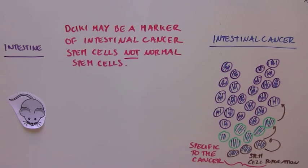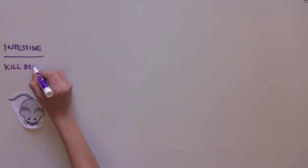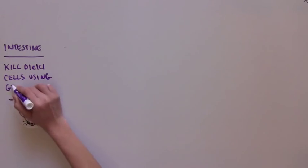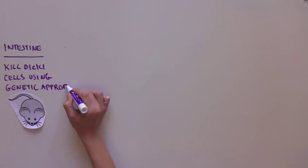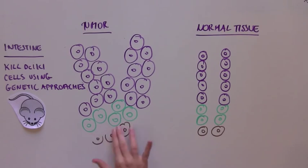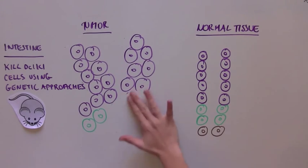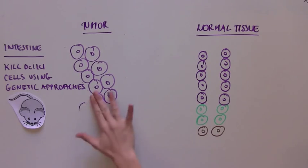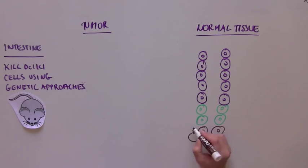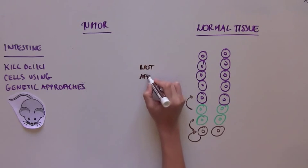If this is true, then killing DCLK1 cells should be able to kill off the tumor because we would be killing the cells that fuel the tumor. So the scientists did just that. When they specifically killed DCLK1 cells using genetic approaches in a mouse with intestinal cancer, the tumors shrunk until there was almost no tumor left. But the normal tissue was for the most part normal, since the normal stem cells are able to divide and repopulate the intestinal tissue.